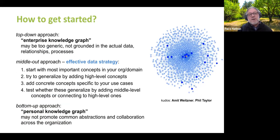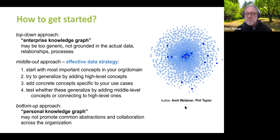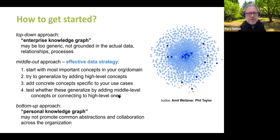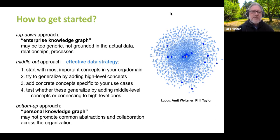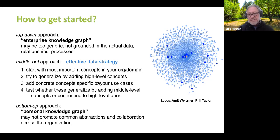In terms of getting started in graph work — if you're involved in an organization trying to understand where to start, I'll cite some resources from the Knowledge Graph Conference. Mia Wisner and Phil Taylor have a really good discussion about where to get started. A lot of organizations take a top-down approach and want to define an enterprise knowledge graph first before anything else — a lot of times these tend to be more generic and maybe not grounded in the actual data, relationships, or business process. There's also a lot of bottom-up work, often called personal knowledge graph. The idea is that a personal knowledge graph may grow and be used by a team, then across different teams, and eventually become used throughout an organization.